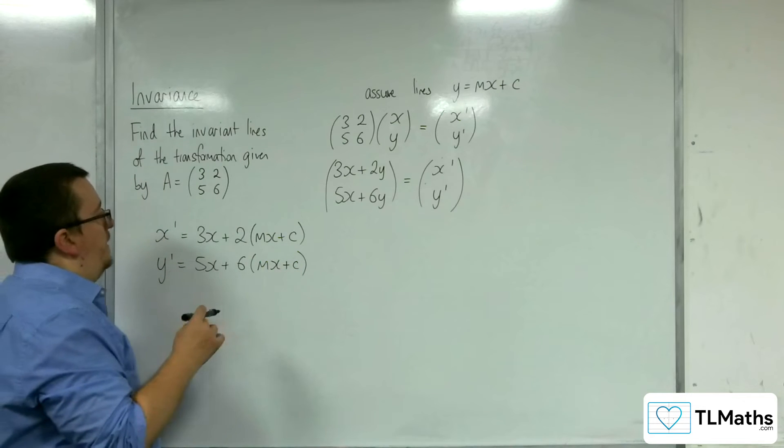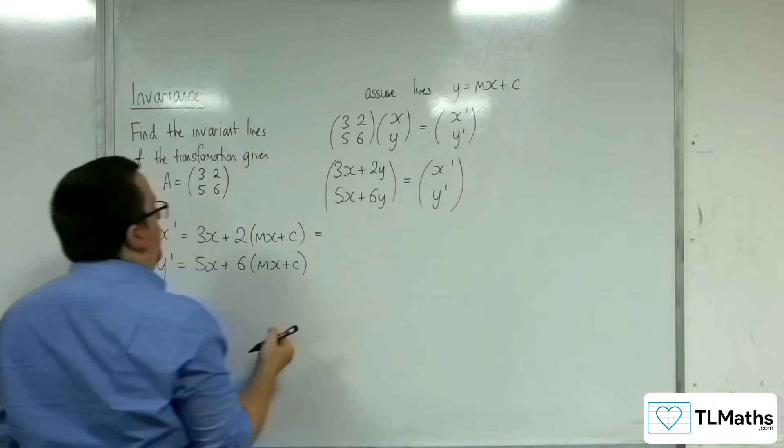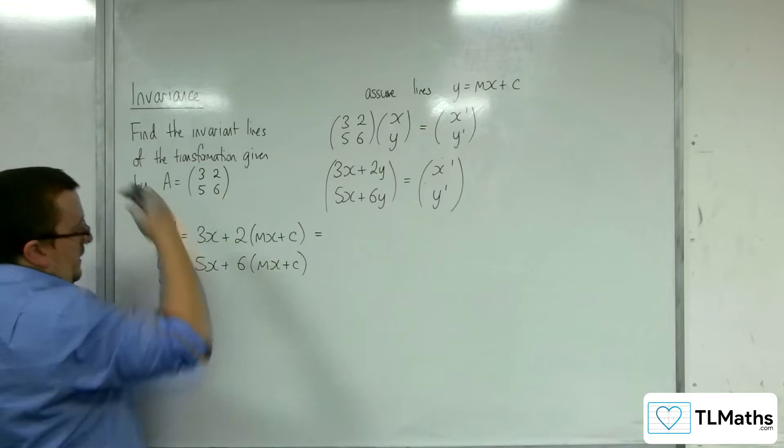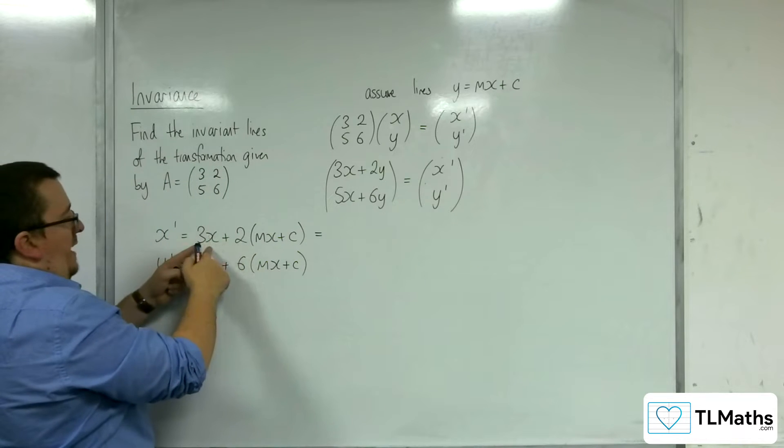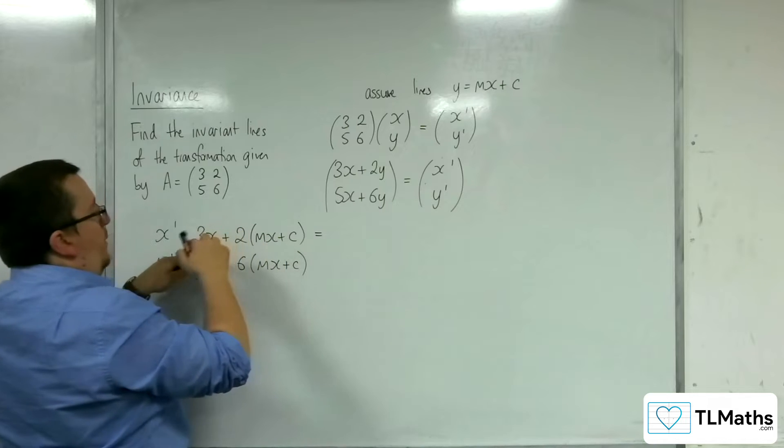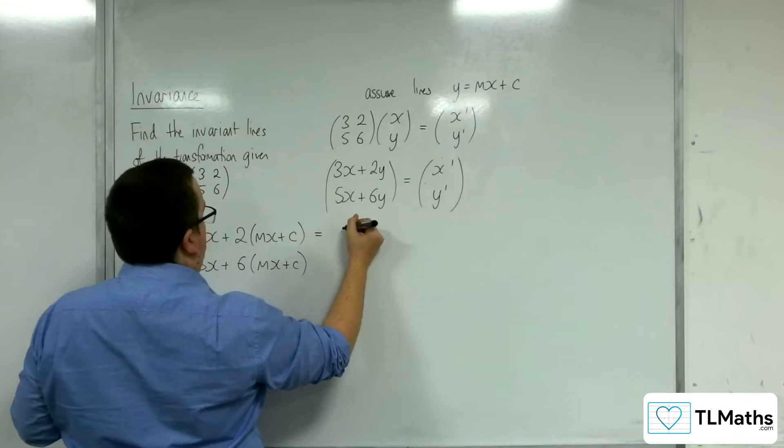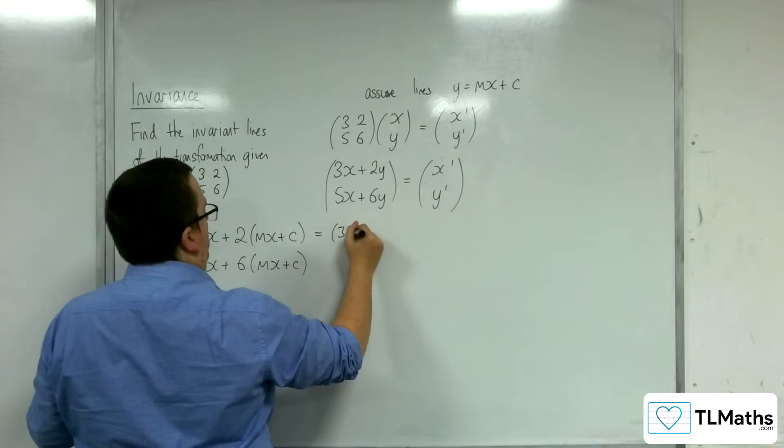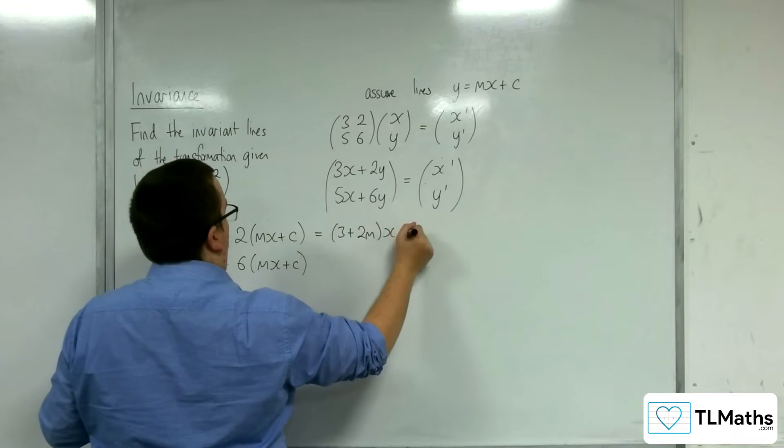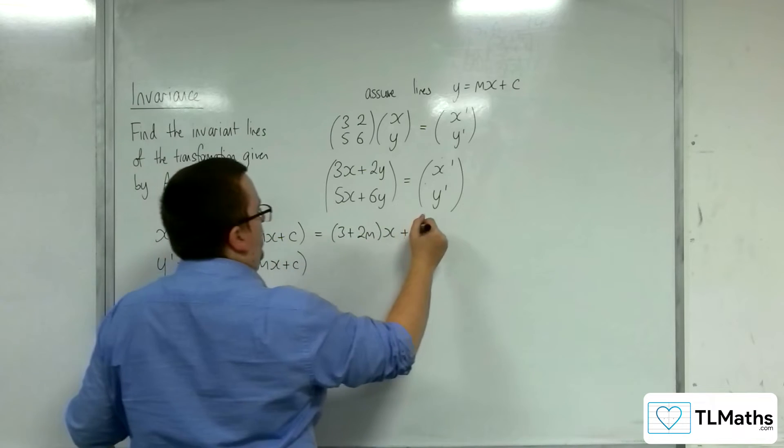So let's simplify these. So what we've got here is, I've got the 3x plus 2mx. So if I factorize that, I'm going to get, so pulling the x out, I'll have 3 plus 2m times x plus 2 lots of c.